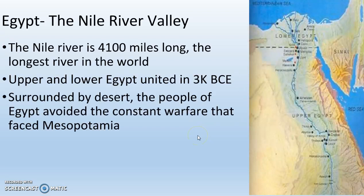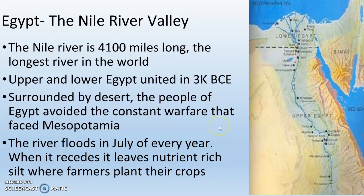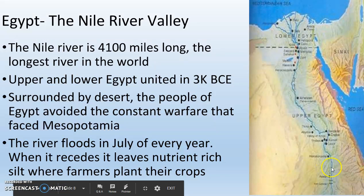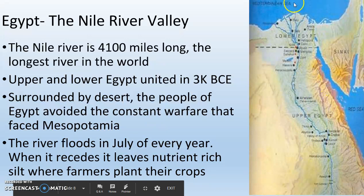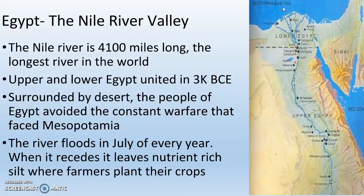So today we're going to talk about Egypt. Egyptian civilization starts along the Nile River. The Nile River is 4,100 miles long — it is the longest river in the world. It flows from south to north, so this is considered lower Egypt and this is considered upper Egypt because the river flows this way. It actually flows into the Mediterranean Sea.